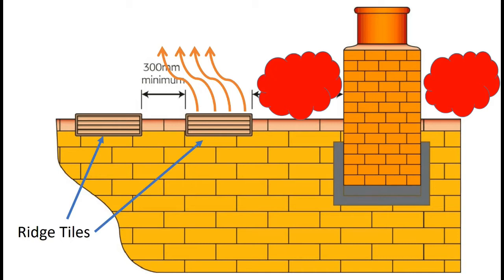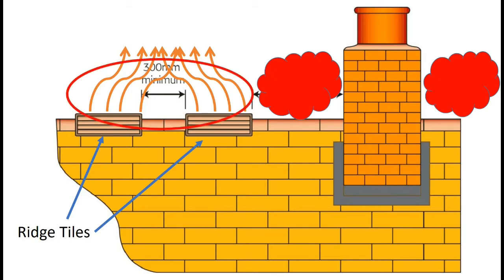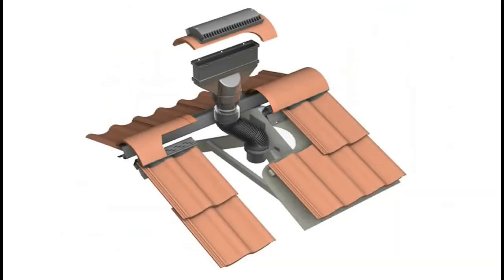Ridge terminals, when they are working, let hot gases out from the top of them. If you place them too close together — nearer than 300 millimetres apart — then the likelihood is that the hot gases will interfere with each other and create another unusual pressure zone within the red circle. Any unusual pressure zone is going to be a problem to the operation of the flue. This is just an exploded view of a ridge terminal to remind you what it looks like in real life.